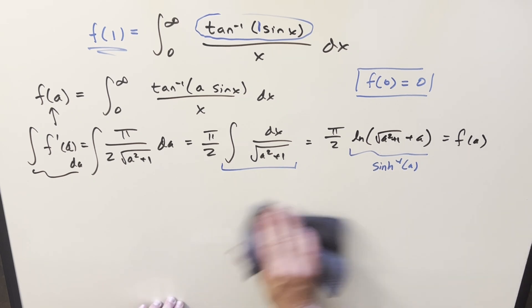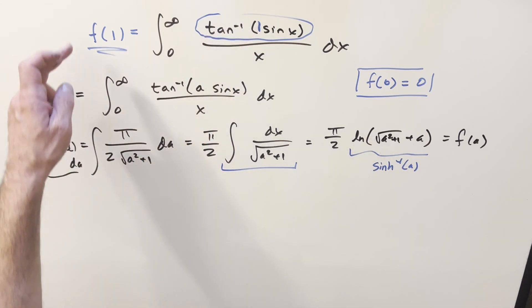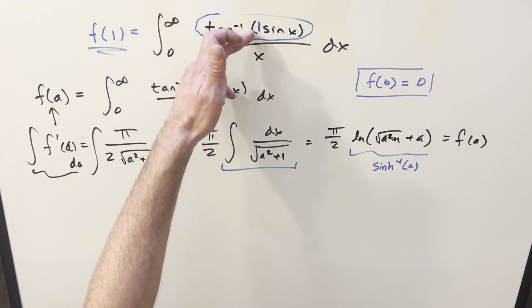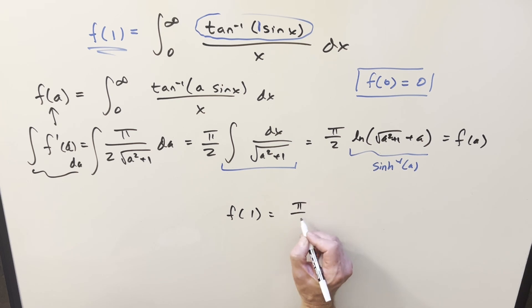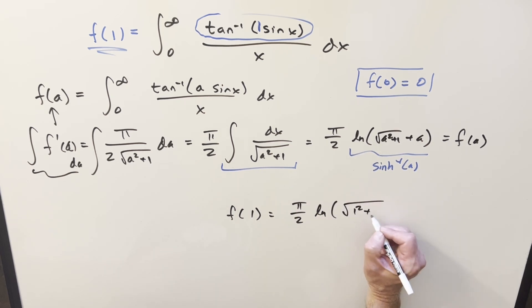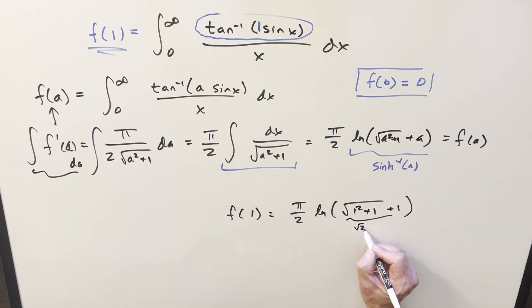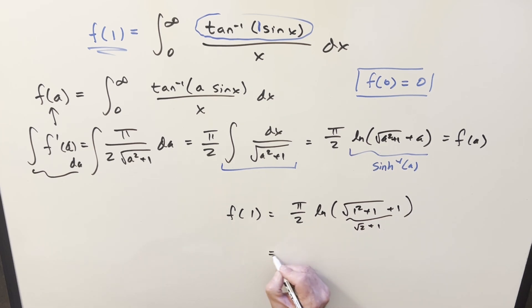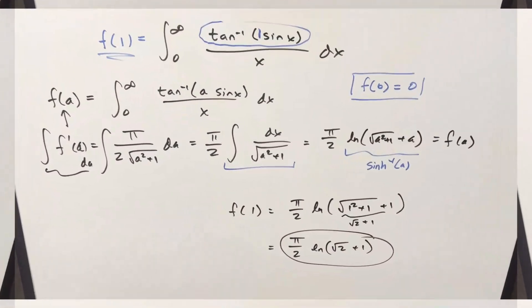Now let's recall what we're doing. We've got our f of a, and in our original problem the a value is just 1 — the coefficient on sine. So we just need to find f of 1: plug in a = 1 everywhere. We get π/2 · ln(√(1² + 1) + 1) = π/2 · ln(√2 + 1). So the final answer is π/2 · ln(√2 + 1). There you have it — thanks everyone for watching, have a good day.